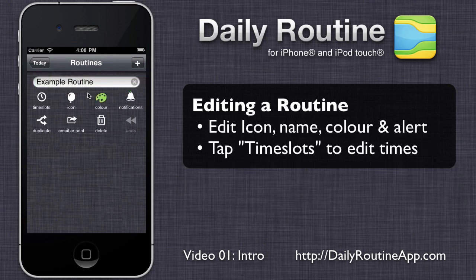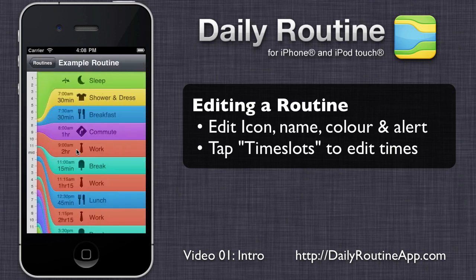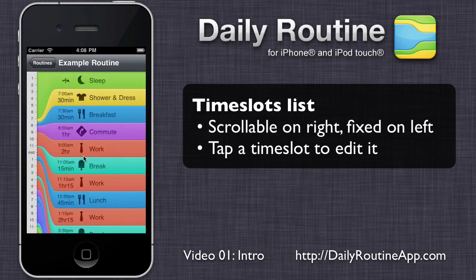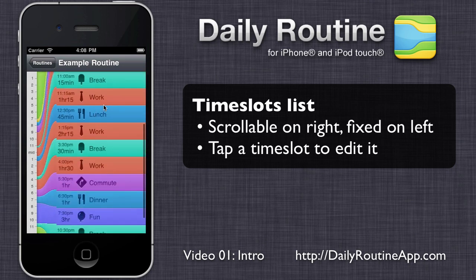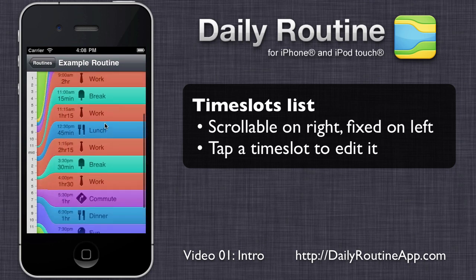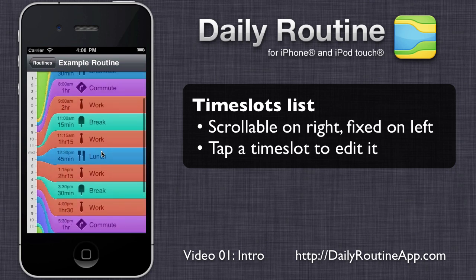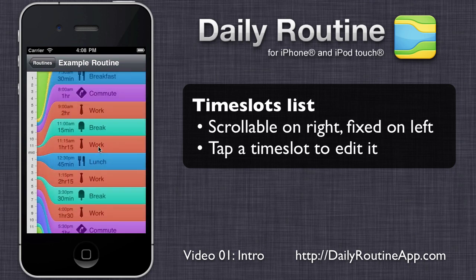Routines have many editable properties, such as name and icon, but the most important is time slots. The time slots list has two parts: a scrollable list of time slots on the right and the relative duration of these time slots on the left. To edit a time slot, tap it.